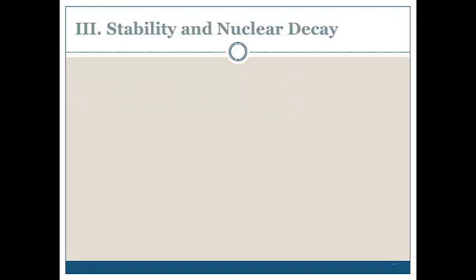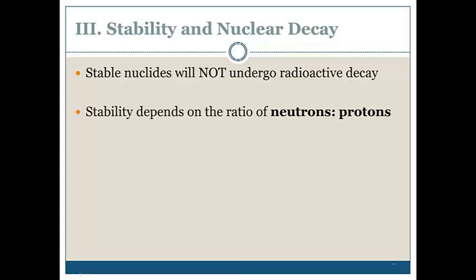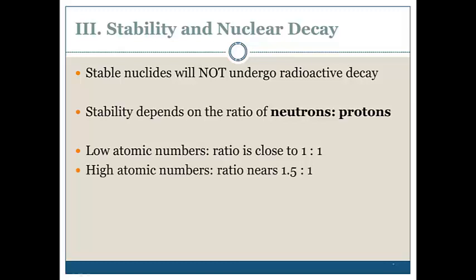Next thing we're looking at, stability and nuclear decay. Stable nuclides will not undergo radioactive decay. And the stability, what makes something radioactive and not radioactive, has to do with the ratio of neutrons to protons. For low atomic numbers, basically atomic numbers below 20 or so, the ratio of neutrons to protons has to be close to a 1 to 1 ratio. As you start getting larger atomic numbers, adding more protons, you need more neutrons to stabilize it. So the ratio has to start getting bigger, and it gets closer to 1.5 neutrons for every proton.